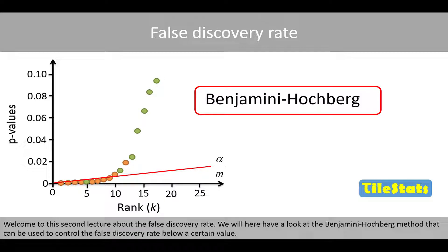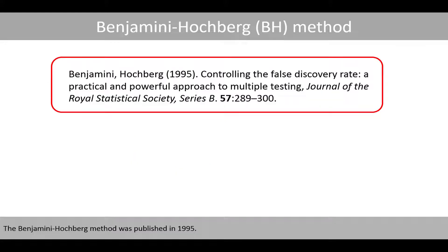Welcome to this second lecture about the false discovery rate. We'll have a look at the Benjamini-Hochberg method that can be used to control the false discovery rate below a certain value. The Benjamini-Hochberg method was published in 1995.